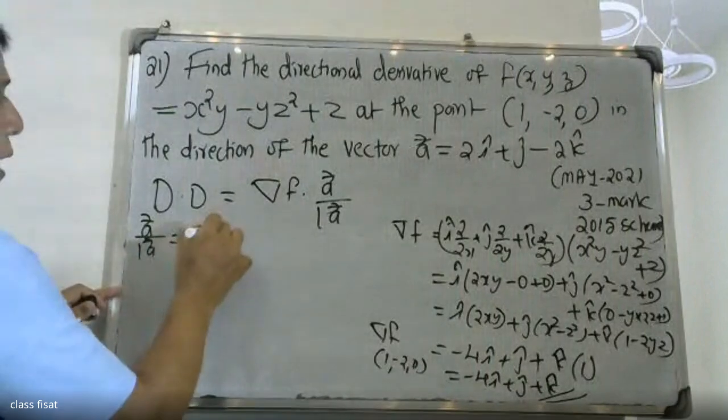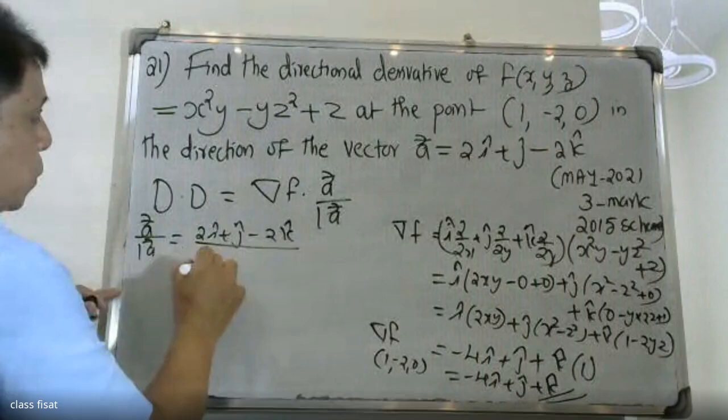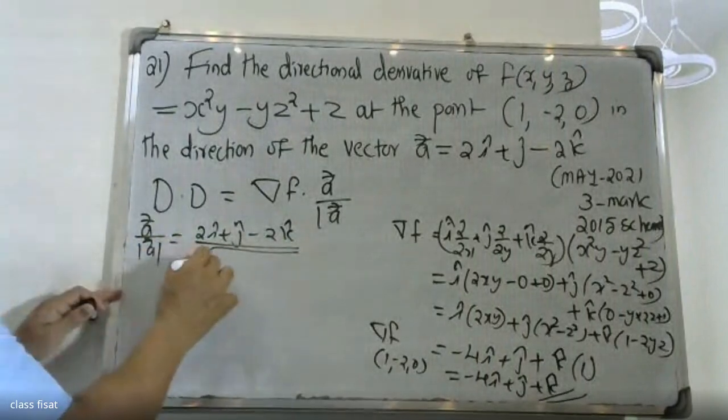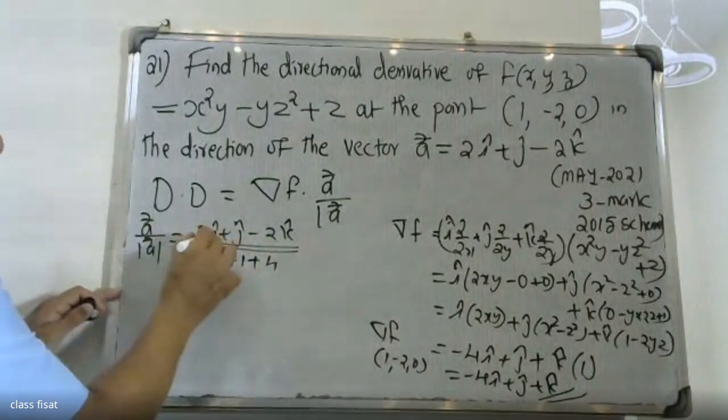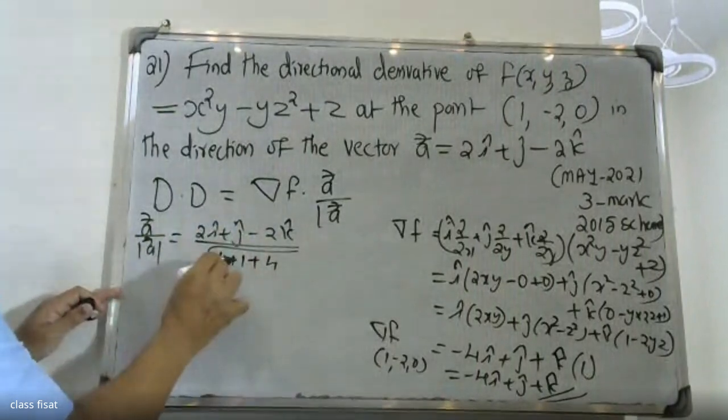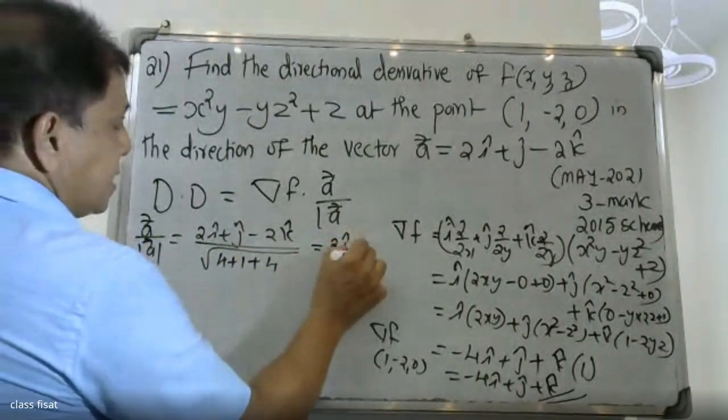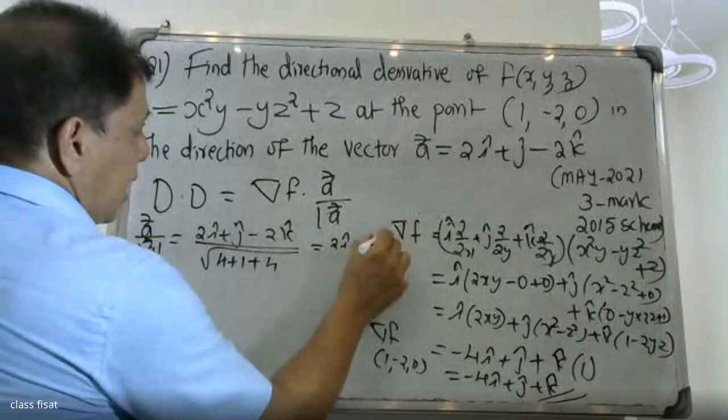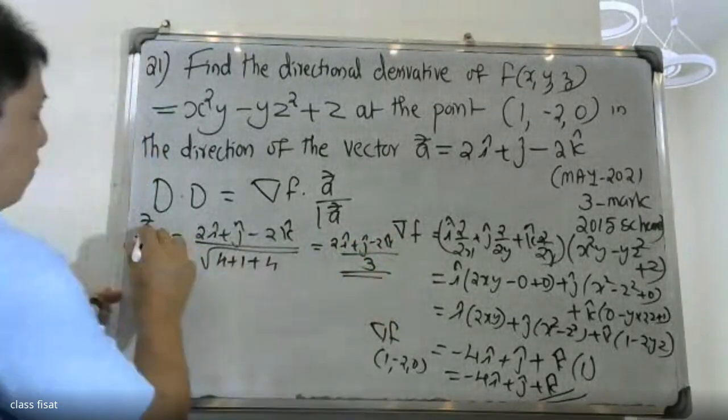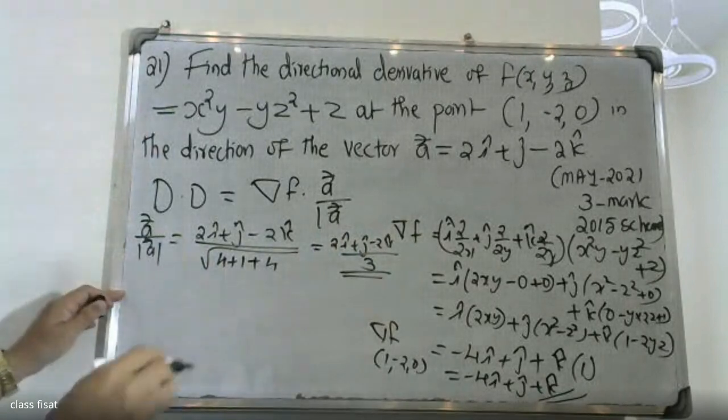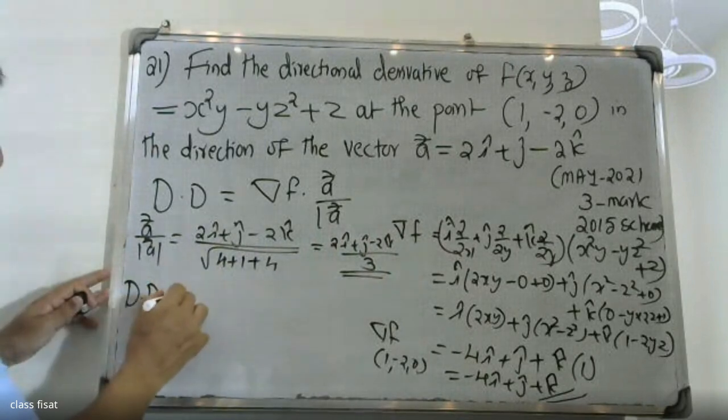Vector a is 2i + j - 2k divided by the modulus, which is root of (4 + 1 + 4) = root of 9 = 3. So the unit vector is (2i + j - 2k)/3.